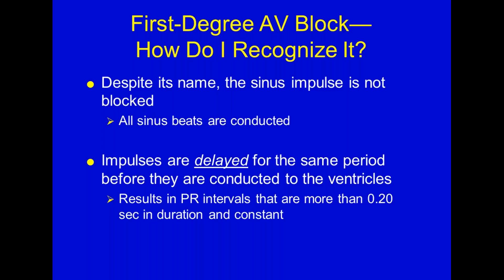In a first degree block, the sinus impulse is not actually blocked at all - it's just delayed, which makes the PR interval more than 0.20 seconds. Looking back at those earlier practice rhythms on the whiteboard, one of those was a first degree block. When we measured the PR interval at 0.22 or 0.24, we knew it wasn't sinus - now we know it would be called a sinus rhythm with a first degree block.